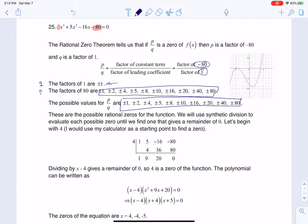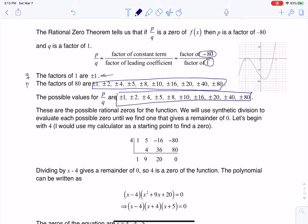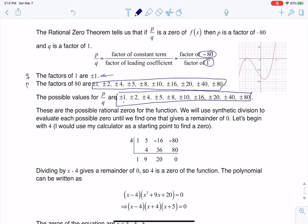Technically, if you didn't have a graphing calculator, you would start plugging in 1 and -1 for synthetic division to see if it worked, then 2 and -2, 4 and -4. You could go through this really exhaustive list.